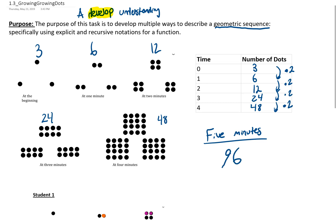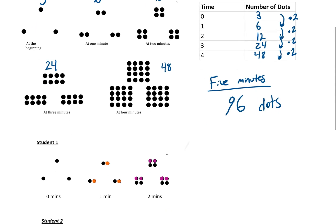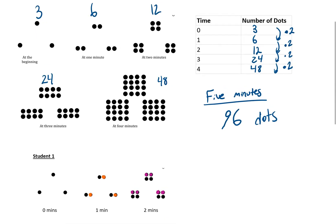Taking that idea, we can see 48 times 2 means at 5 minutes we're going to have 96 dots. That answers the first question using a recursive strategy. I've approached it the same way Student 1 has approached it.